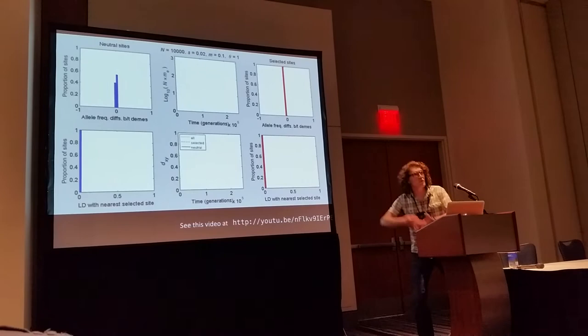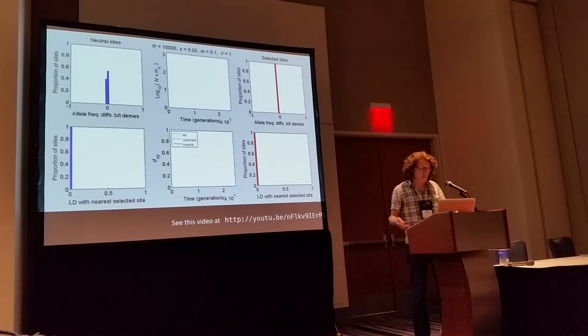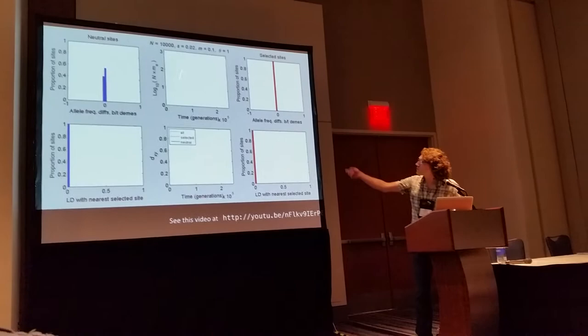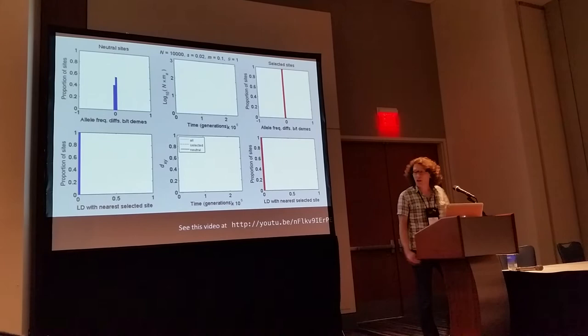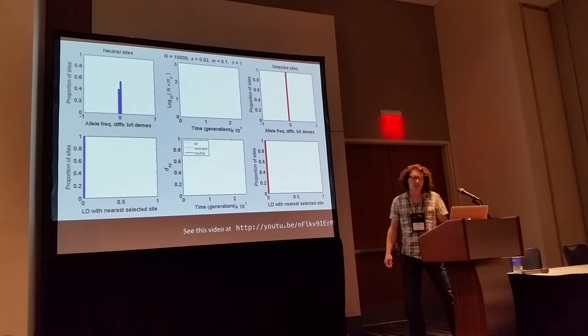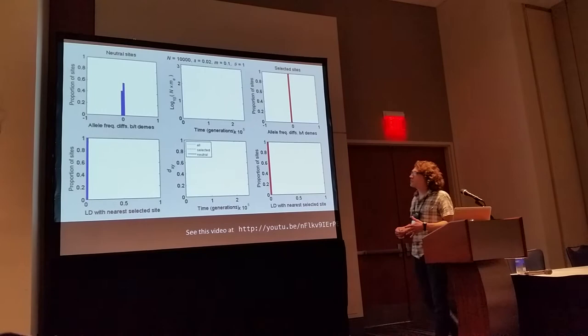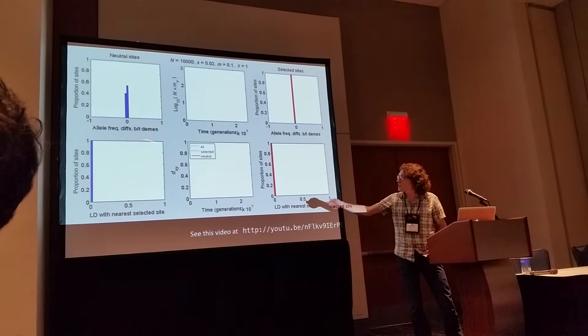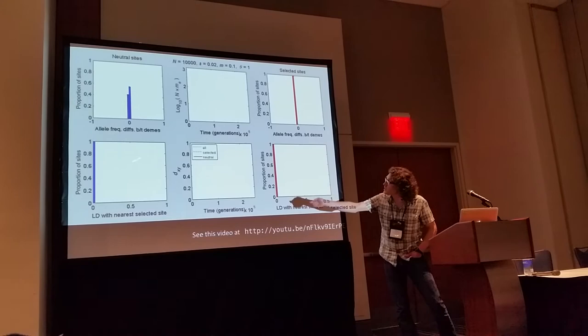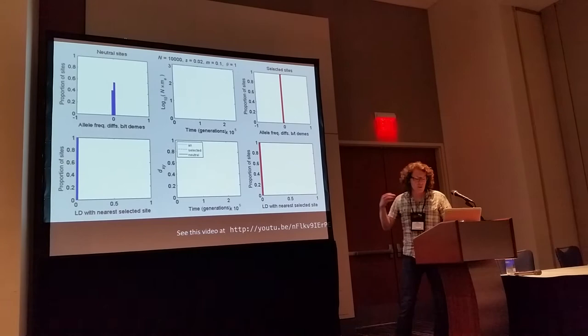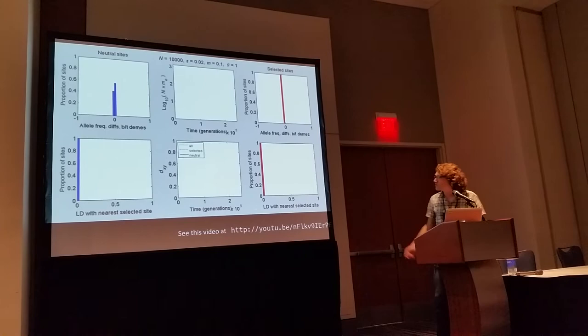To show what these dynamics look like over time — from zero divergence to what we'd regard as distinct species — here's an animation from one simulation run. In the middle are time series of key metrics: effective migration rate at the top, and DXY (average pairwise differences) at the bottom, computed over all polymorphic sites. The two side columns show histograms of divergence metrics for individual loci: allele frequency differences and linkage disequilibrium of a focal locus with its nearest divergently selected neighbor. On the left are statistics for neutral sites in blue; on the right, for sites under divergent selection in red.